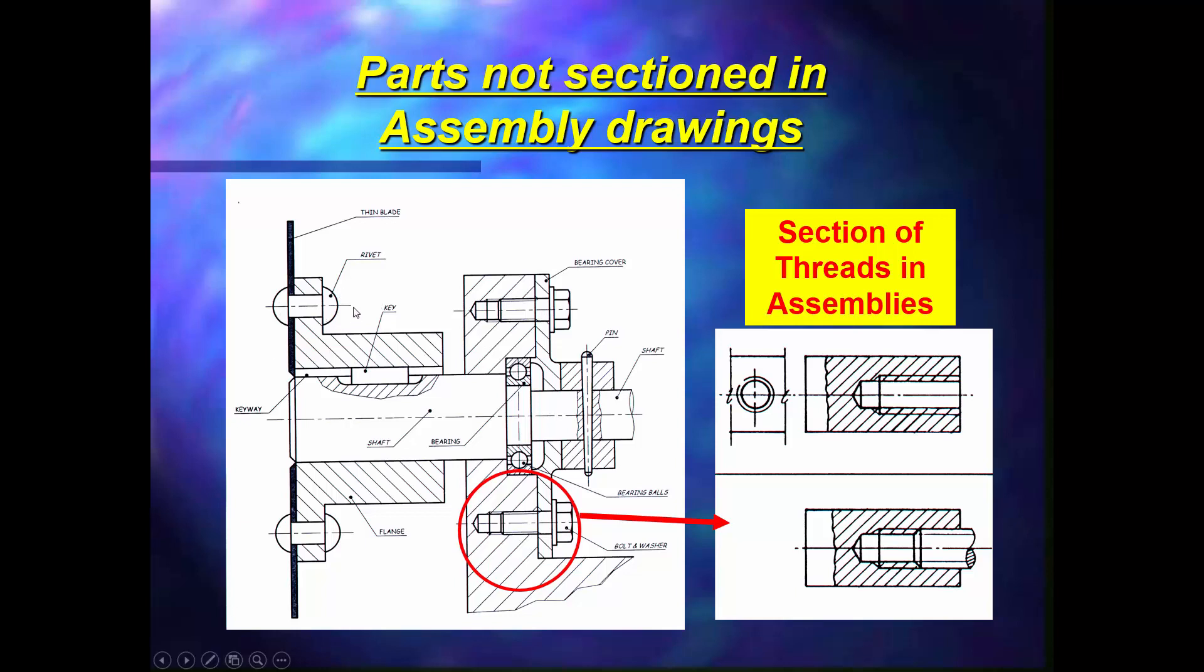Rivets we do not section. It's also a fastener. Shafts we do not section. Any time we section a shaft is when we do a partial sectional view as we've shown here around the keyway to show the key.